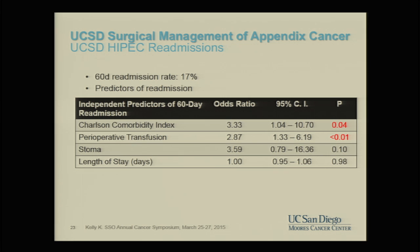Dr. Kelly has done work looking at readmission rates and predictors of readmission. The Charlson comorbidity index again predicts higher readmission risk, as does having any blood transfusion — either during or after the procedure. Stoma formation and length of stay were not independent predictors on multivariate analysis.